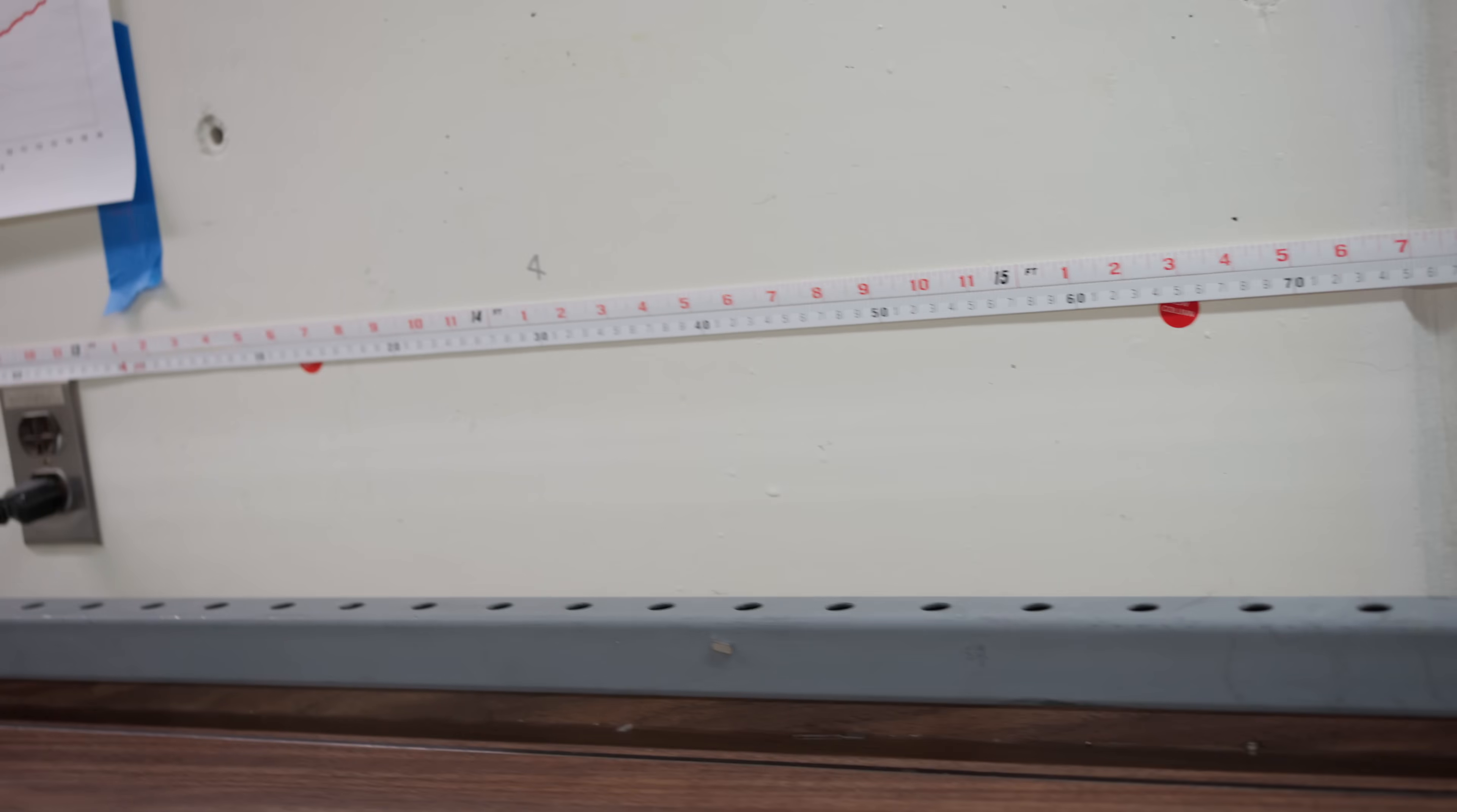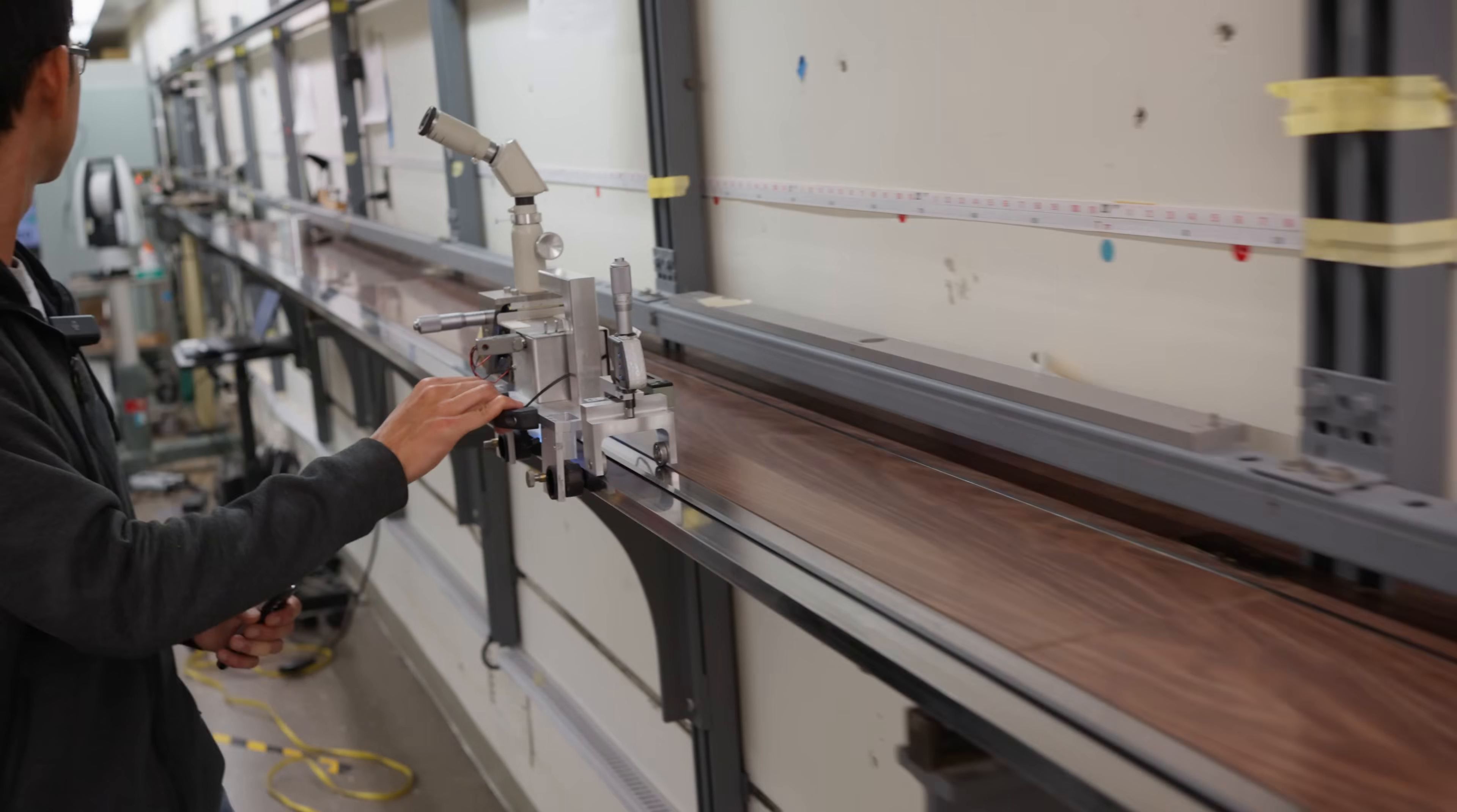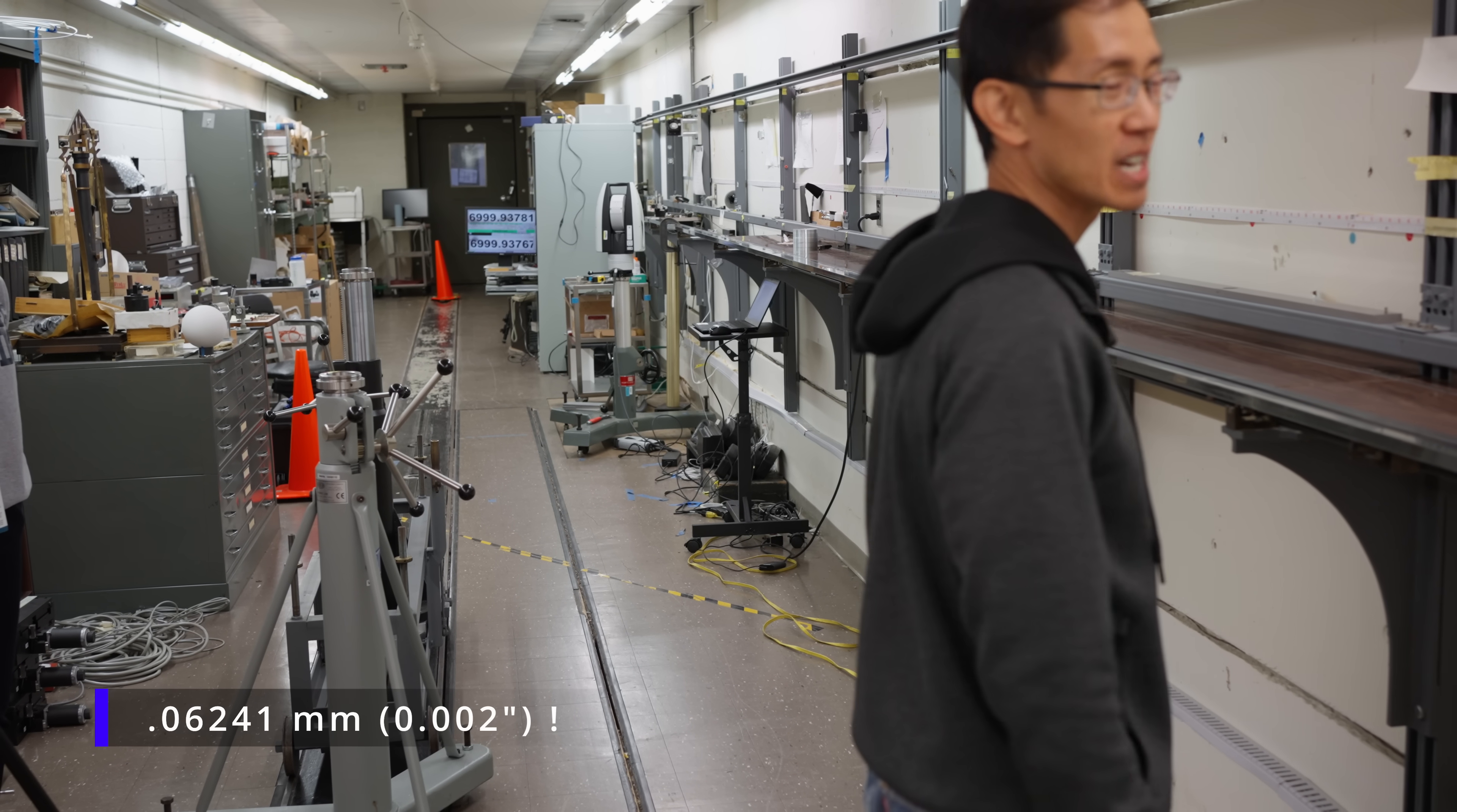Can we take this one further down to see what the accuracy is, like, down at the end? Because we measured one meter. Oh, sure, absolutely. Let's go all the way to the seven-meter mark. So, yeah, we're about 63 micrometers off from nominal. Very good tape. Very good tape.